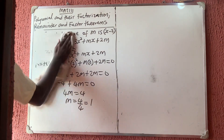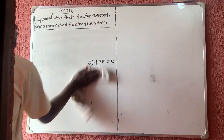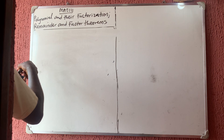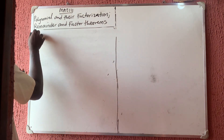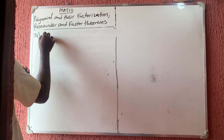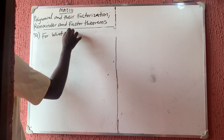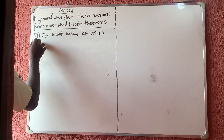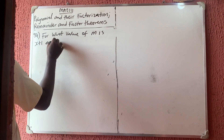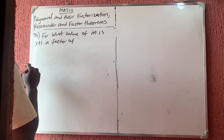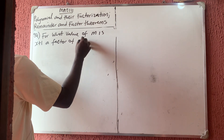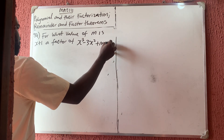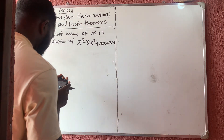This is very simple. The next question is question number 84: For what value of m is x plus 1 a factor of x cubed minus 3x squared plus mx plus 2m?